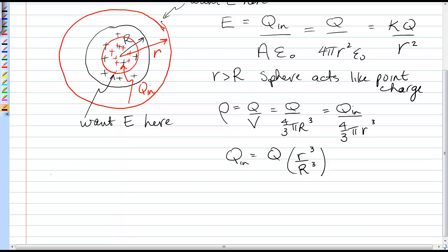Okay, now we can put that into Gauss's law. So, for r less than the radius of the sphere, we see the E, same formula, q in over A epsilon naught. Q in now is q, little r cubed over big R cubed.